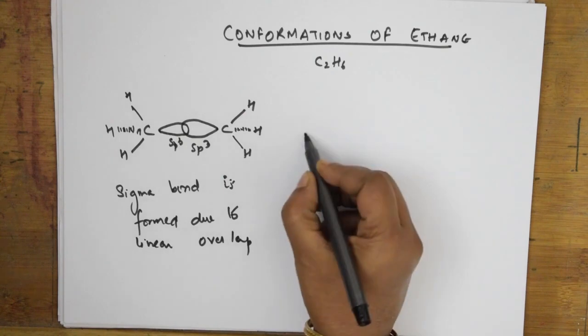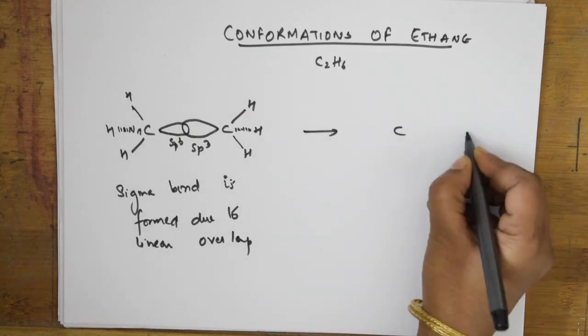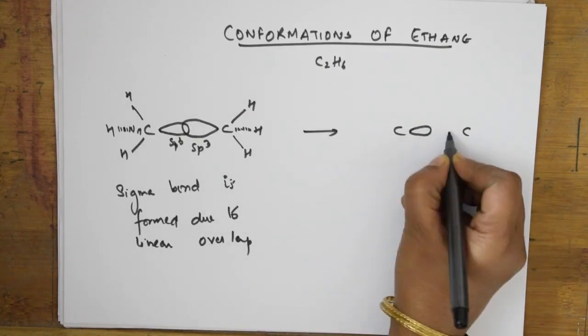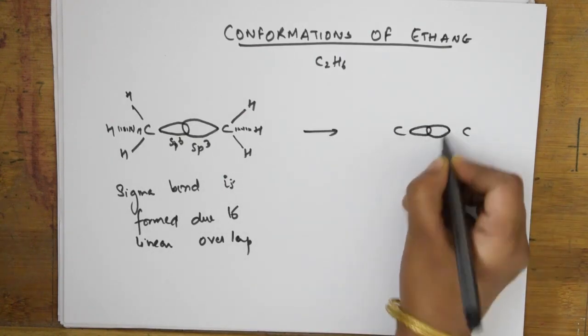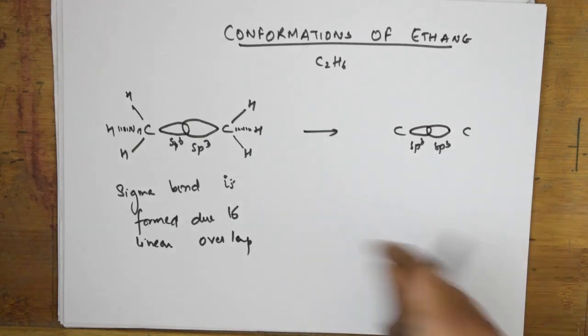When we rotate one carbon of ethane relative to the other, the hydrogens shift positions. There are infinite conformations of ethane, but among them only two extreme cases — eclipsed and staggered — are what we will study. These are represented by sawhorse projection and Newman projection formulas.